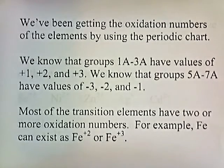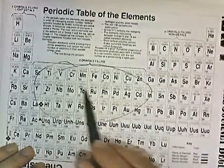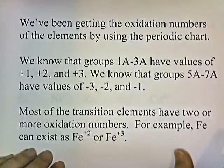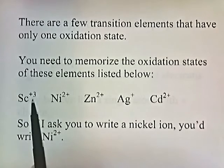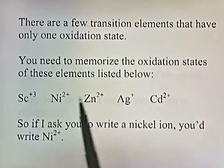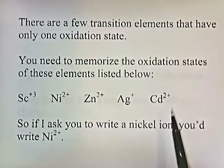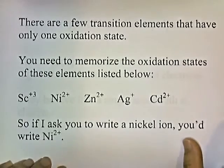Most transition elements have two or more oxidation numbers. For example, iron can exist as iron 2+ or iron 3+. These elements in the transition zone have variable oxidation states. However, a few transition elements have only one oxidation state that you need to memorize: scandium is plus three, nickel is plus two, zinc is plus two, silver is plus one, and cadmium is plus two.